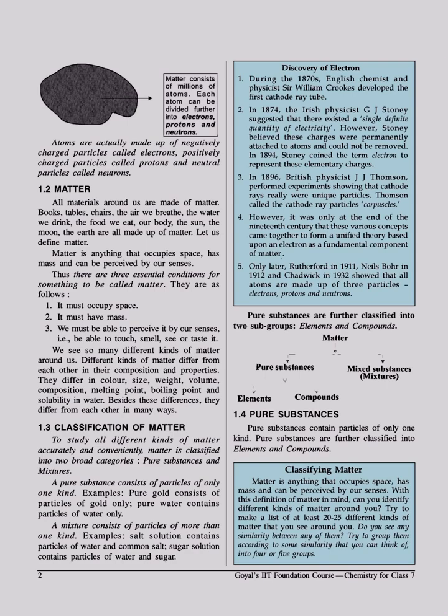Matter is anything that occupies space, has mass, and can be perceived by our senses. With this definition of matter in mind, can you identify different kinds of matter around you? Try to make a list of at least 20 to 25 different kinds of matter that you see around you.